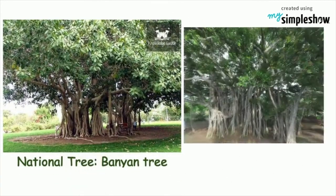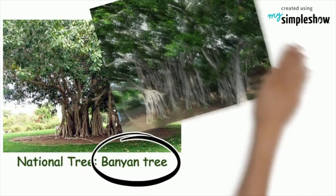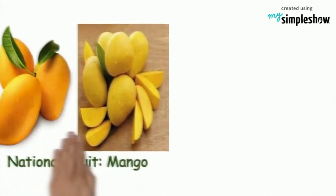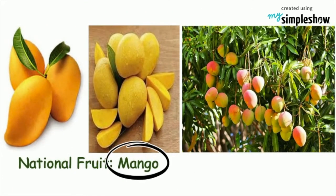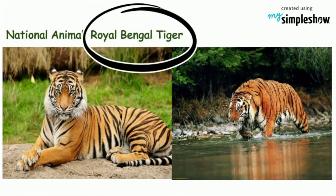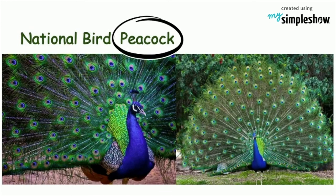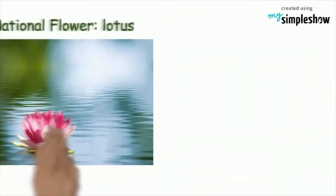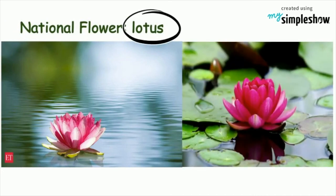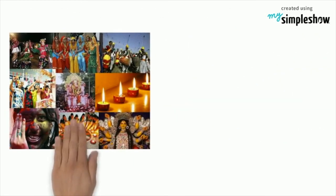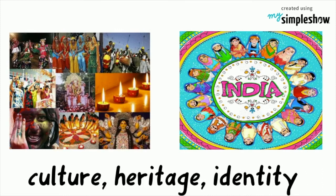The national tree is the banyan tree. The national fruit is the mango. The national animal is the Royal Bengal tiger. The national bird is the Indian peacock. The national flower is the lotus. These symbols of India show the culture, heritage, and identity of the nation.